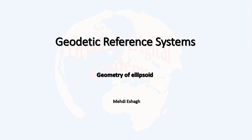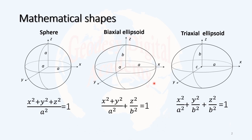Welcome to the second part of the course Geodetic Reference Systems. In this lecture I will discuss the geometry of ellipsoid. I know that a biaxial ellipsoid is the best mathematical shape for the Earth — it is much simpler than a triaxial ellipsoid. It is very important that we know the geometry of this ellipsoid, because later we should define geometrical quantities on its surface and work with that.